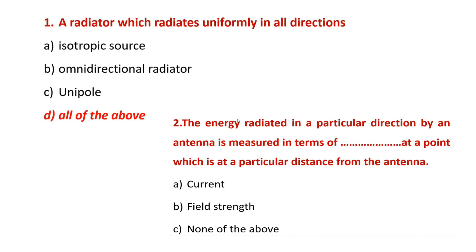First MCQ: A radiator that radiates uniformly in all directions — options include isotropic source, omni-directional radiator which is uniform, and all of the above. The answer is all of the above. The energy radiated in a particular direction by an antenna is measured in terms of field strength at a particular distance from the antenna.